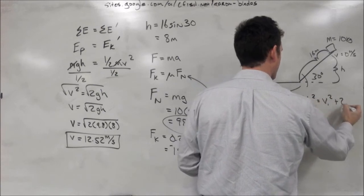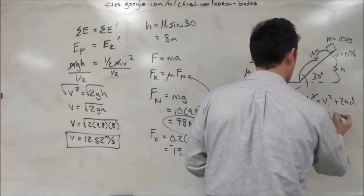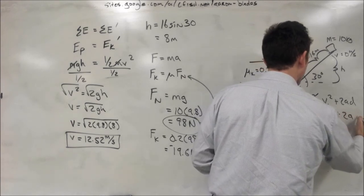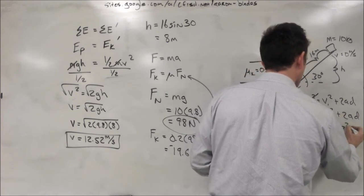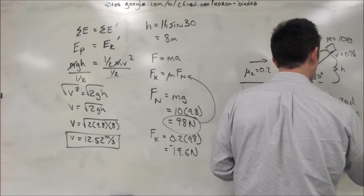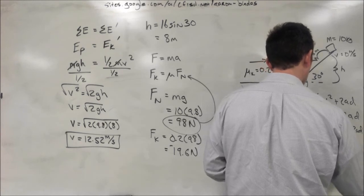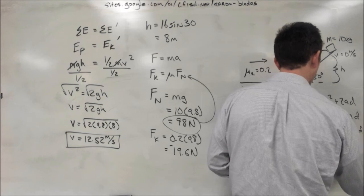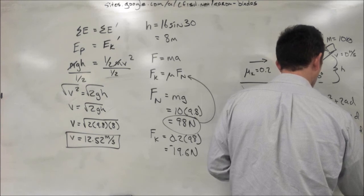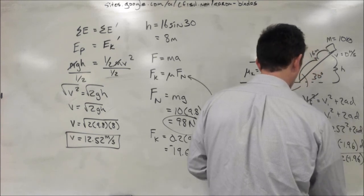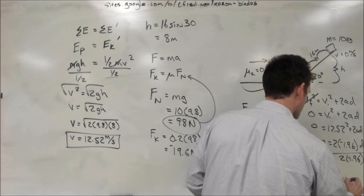Lastly, we take our equation vf squared equals vi squared plus 2ad, and use it to calculate distance. Our final velocity is 0, so if we plug in our initial velocity of 12.52 squared equals 2 times negative 1.96 times d. Sorry for obscuring all of my math. So our arithmetic gives us d is equal to 39.99 meters.